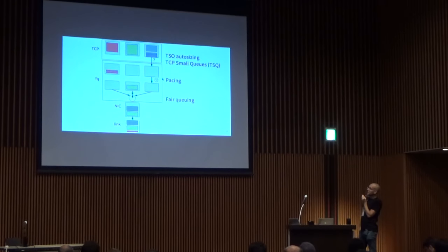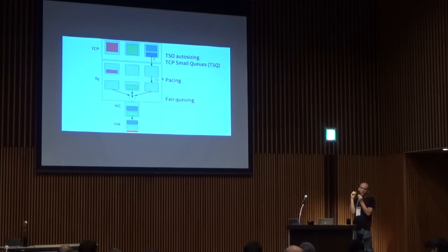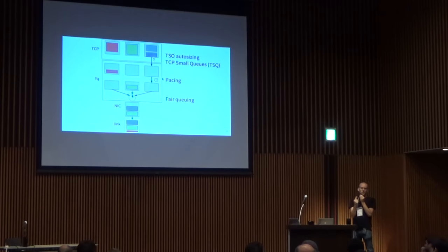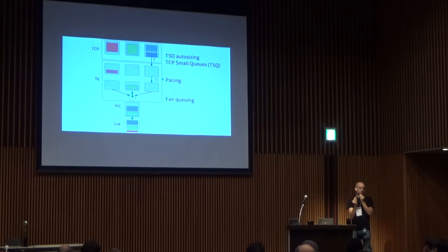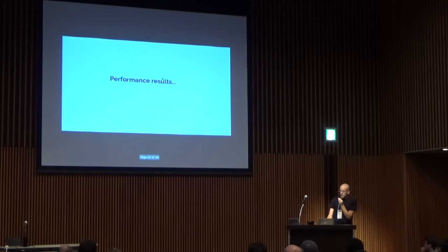The most full-featured QDISC is called FQ, which offers two services. The first layer is the pacing layer, which decides the appropriate release time for each SKB based on the pacing rate set by the congestion control module. Once the release time is reached, it releases to the fair queuing component of FQ, which mixes packets from different flows in a way that's fair on a byte-by-byte basis. This reduces head-of-line blocking and gives small flows a better chance. Once fair queuing is ready, it hands the packet to the NIC and it heads to the wire.